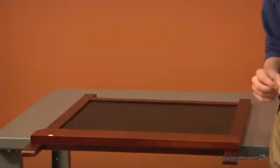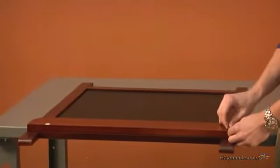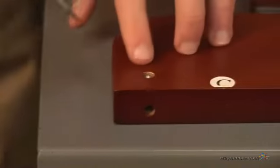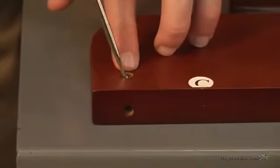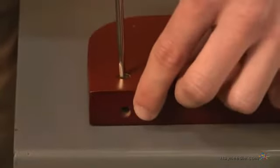First we're going to take our cam locks and with the supply tray turned over insert it into the hole provided. Now using your screwdriver make sure the line on top of your cam lock is pointed straight down towards the hole at the bottom.